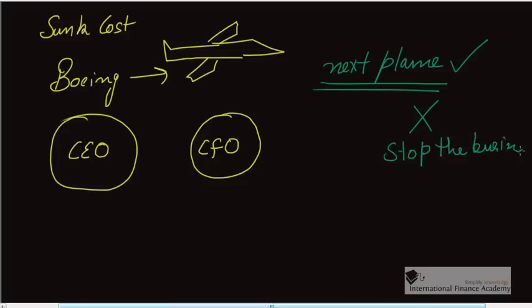Whether to go ahead and manufacture the next plane and sell it or not sell it and stop the business. CEO was saying we should go ahead and manufacture our plane, the next plane in the system. CFO says let's stop the operations. Now the question is why were they fighting? What was the problem?